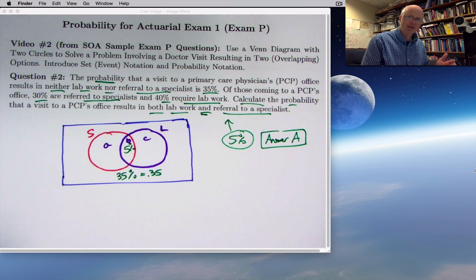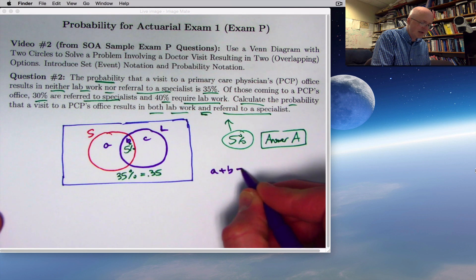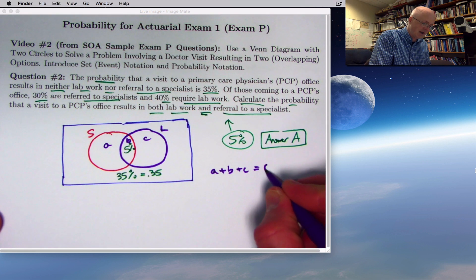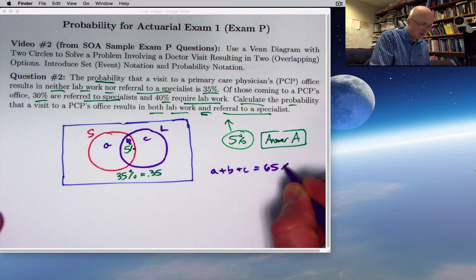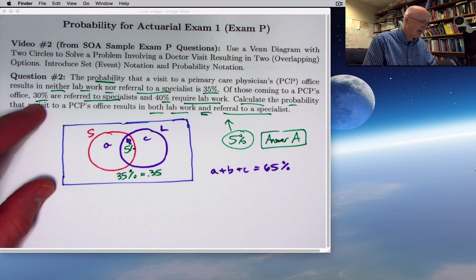Those represent unknown numbers I want to solve for. The answer to the question is the value of little b. I could write down a system of algebra equations. I know that A plus B plus C must be 100 minus 35 or 65. You can put a percent sign there if you like.